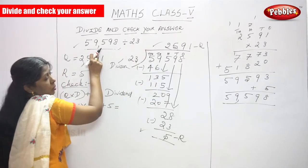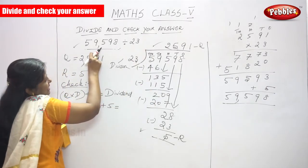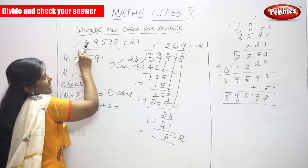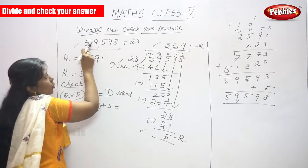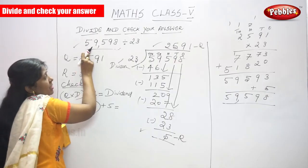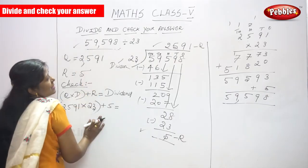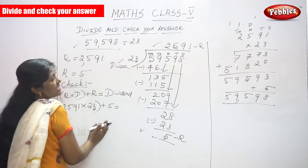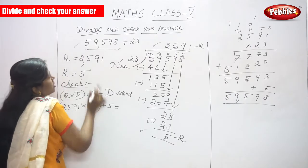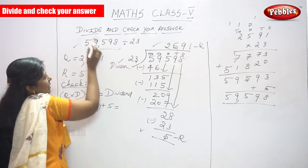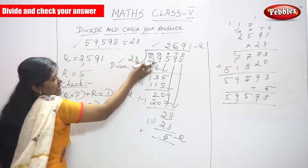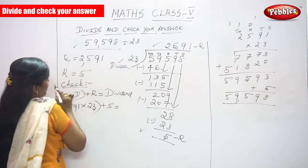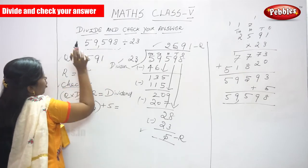Because you get the same dividend — that is the original question. So this is the right method of division. Divide the sum, and check the sum also.